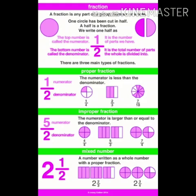The second type of fraction is an improper fraction. In an improper fraction, the numerator is larger than or equal to the denominator. For example, 5 upon 2, where 5 is the numerator and 2 is the denominator, and the numerator is greater than the denominator.